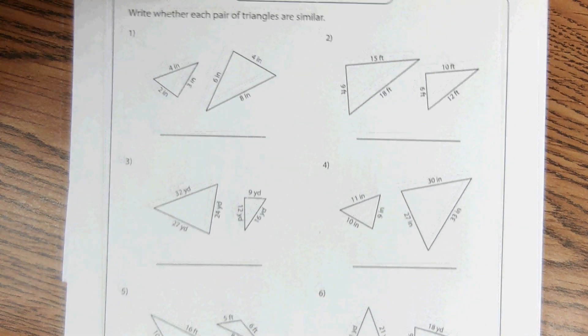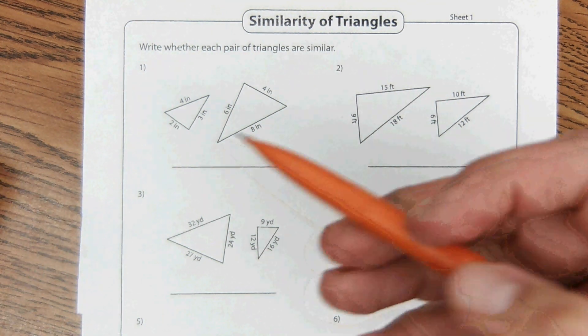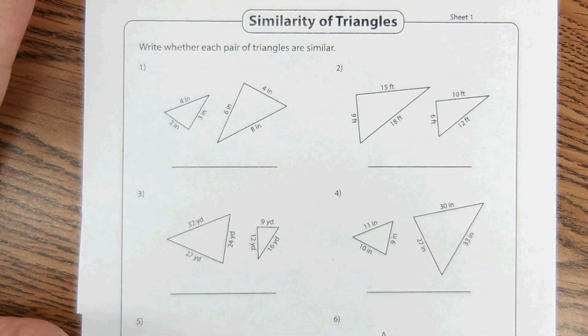Okay, you got it? Okay, I'm going to move to the top now. So now we're going to try the problems. It says, write whether each pair of triangles are similar. Well, we have to see if they are proportional.